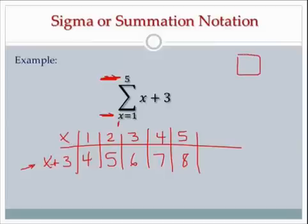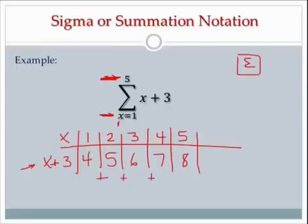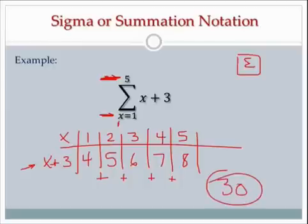Sigma means sum — anytime you see a sigma in math, it means sum. Some of you might be familiar with it because in Microsoft Excel there's a sigma button in the toolbar that adds up cells in a spreadsheet. So now I take 4, 5, 6, 7, and 8 and add them up. 4 plus 5 plus 6 plus 7 plus 8 is 30, and that's my answer.